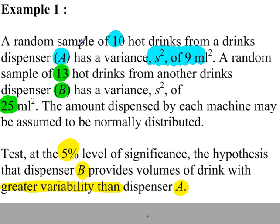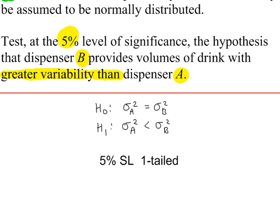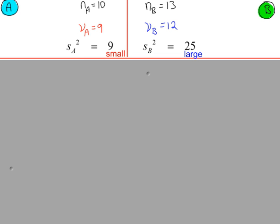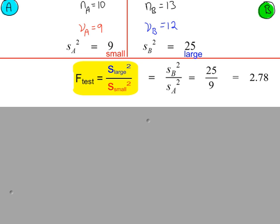Example 1: we have two samples. Highlighted in blue: sample size 10, sample variance 9. Highlighted in green: sample size 13, sample variance 25. We're testing whether the variance for B is greater than A at the 5% level of significance. H0 and H1 are set up accordingly. The test statistic is the large value divided by the smaller one — dividing variances — giving 2.78.